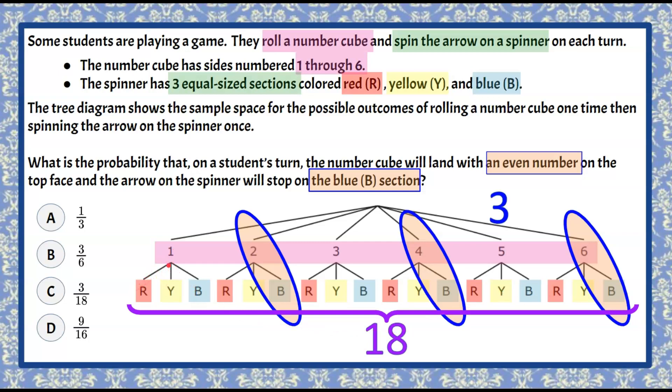One red, one yellow, one blue, and we could keep going with each number. So three of these 18 outcomes are even and blue.